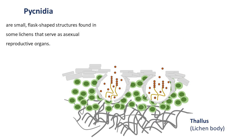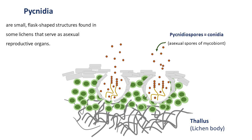The primary structure of asexual reproduction is the pycnidium. Pycnidia are small, flask-shaped, chamber-like structures often embedded within the thallus, the main body of the lichen. Pycnidia are the fruiting body of the mycobiont, and they produce asexual spores called pycnidiospores, or simply conidia.